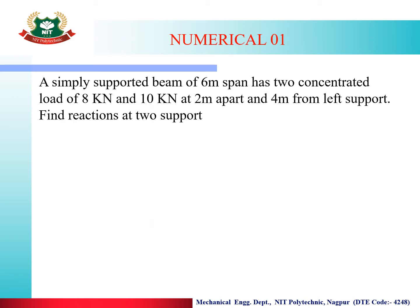So let us start our first numerical. Kya diya hai question mein: A simply supported beam of span 6 meter has two concentrated loads of 8 kilonewton and 10 kilonewton at 2 meter apart and 4 meter from left support. Find the reactions. Jab bhi haomko problem diya jata hai, toh problem ko achhe se padhana hai. Sabse pehle aapko kaunsa support diya hua hai? Simply support.